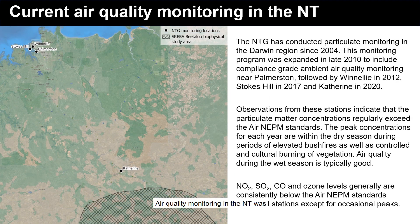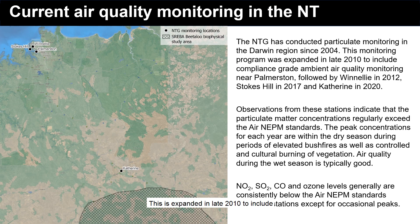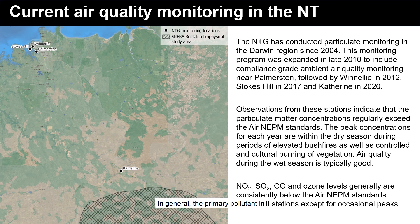Air quality monitoring in the Northern Territory was developed based on the results of a pilot study of air quality in Darwin undertaken by the CSIRO in 2000 and 2001. Based on the results of the study, the Northern Territory Government has conducted particulate monitoring in the Darwin region since 2004. This was expanded in late 2010 to include air quality monitoring near Palmerston. Additional stations were installed at Winelli in 2012, Stokes Hill in 2017 and Katherine in 2020. In general, the primary pollutant in Darwin and Palmerston is particulates, both PM2.5 and PM10, found in smoke from distant and local vegetation burning during the dry season.